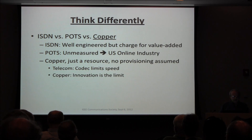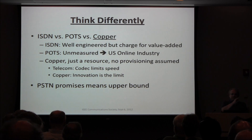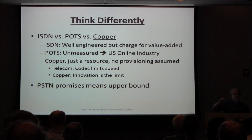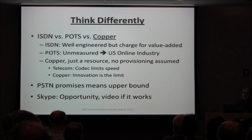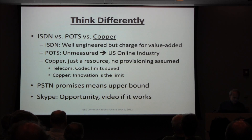PSTN has a built-in upper bound of 56KB in the US, so they can guarantee your path will work — therefore you can't do full video, and you get a busy tone when they can't guarantee you a circuit. Skype doesn't guarantee anything — they make zero promises — and yet they give you very high quality, because they're not promising it but increasing their opportunities.